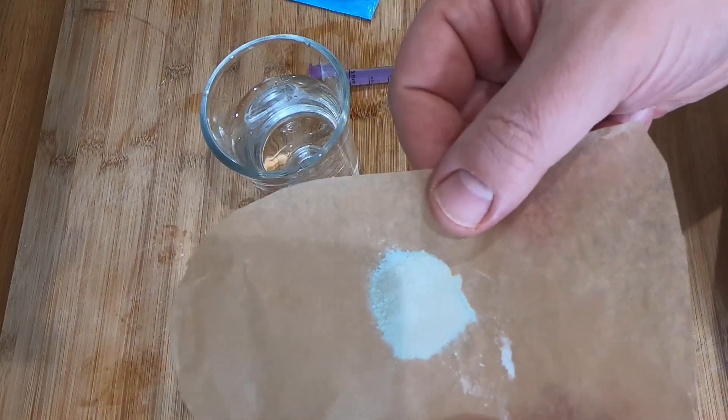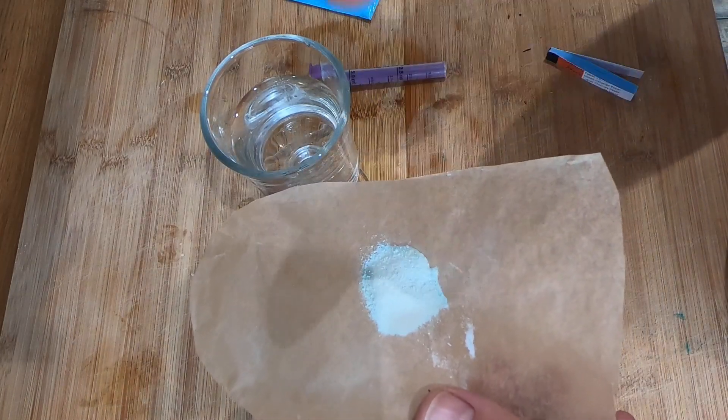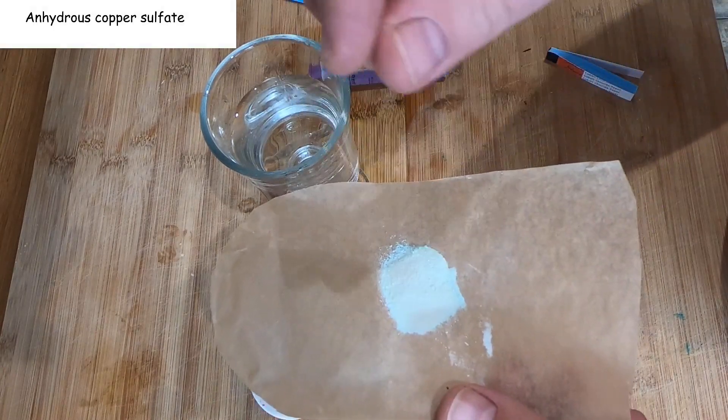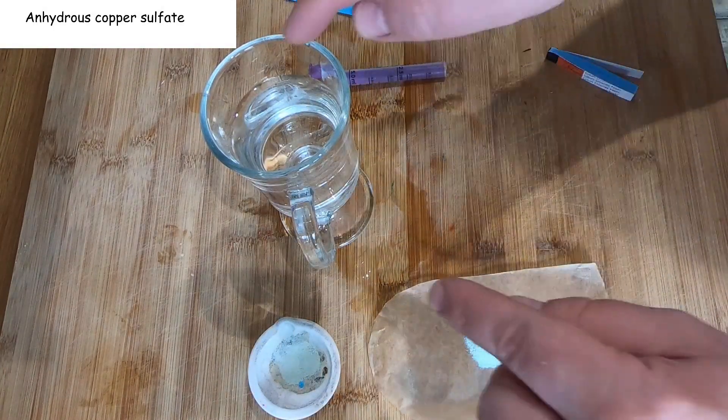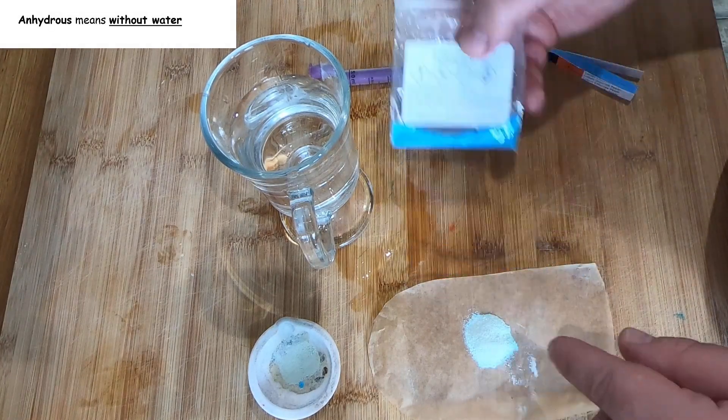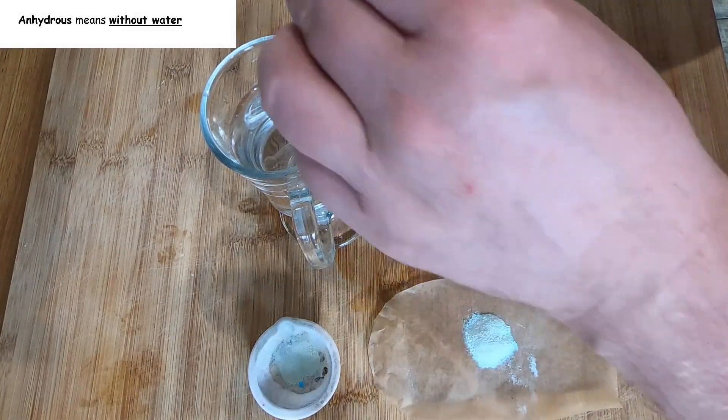Okay guys, what I have here is white anhydrous copper sulfate. Basically I took some blue copper sulfate crystals, heated them in the oven, and they became anhydrous. It gently evaporated the water.